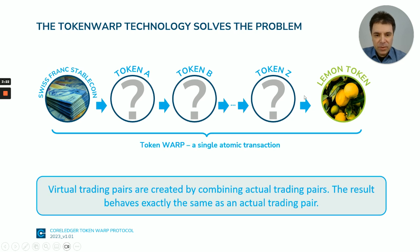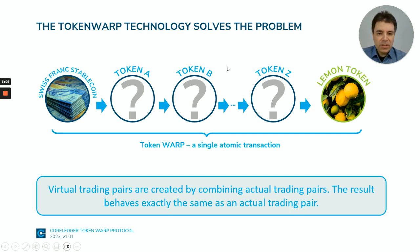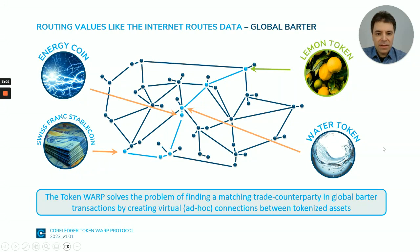And why is this important? Because if it is a single transaction then it cannot break somewhere in the middle, which would be the worst that could happen. So it is either executed completely or not at all, and in both cases there is no counterparty risk for the trader. This is the big feature of the Token Warp, allowing you to create, for example, a global digital data market, which would not be possible without blockchain technology and without the Token Warp Protocol.